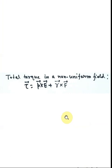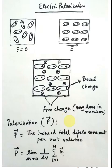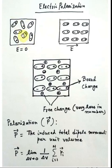Now let us discuss electric polarization. Consider a polar dielectric medium. When there is no electric field, the intrinsic dipoles are randomly oriented due to thermal agitation — the thermal kinetic energy of individual molecules causes them to vibrate randomly. So if we compute the average dipole moment, it will be zero.